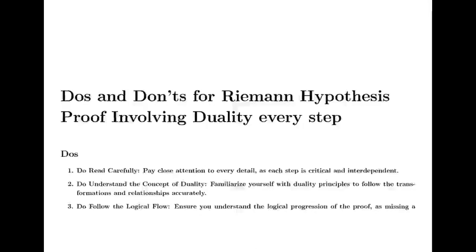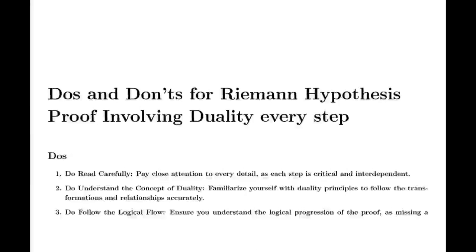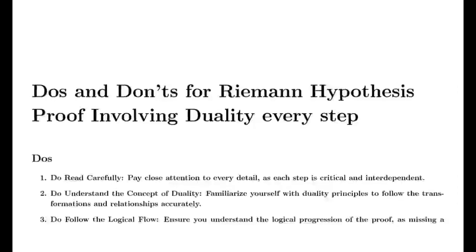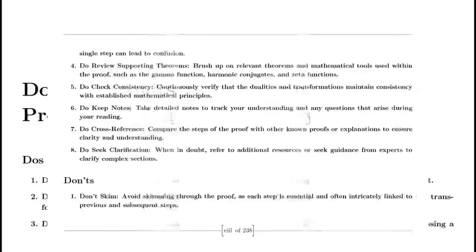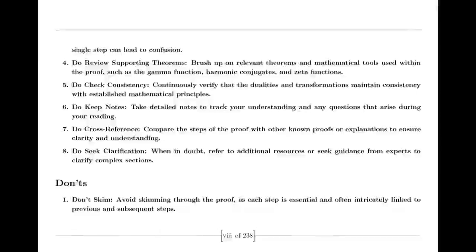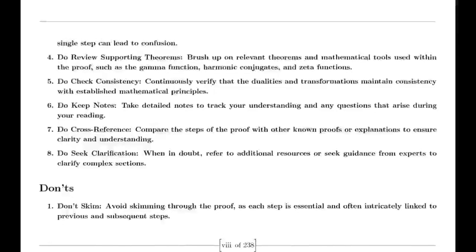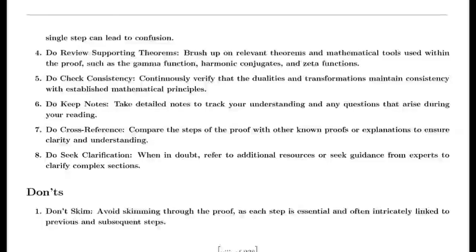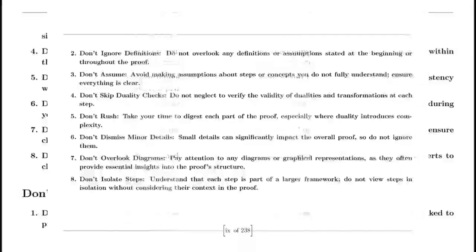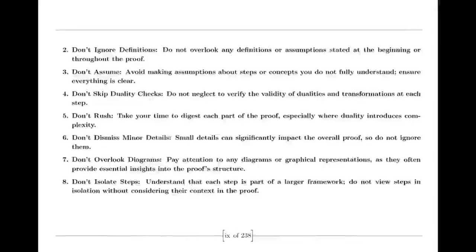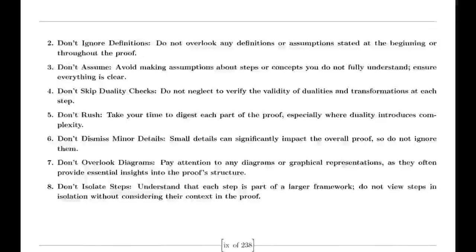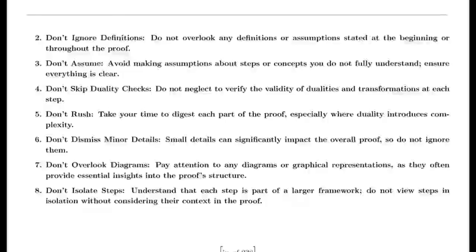Euler also tackled the Basel problem, which was concerned with finding the exact sum of the reciprocals of the squares of the integers. By examining the sine function and its product representation, Euler derived a formula for this sum, showing that it equals π²/6. This result was a significant achievement in mathematics and highlighted Euler's ability to uncover connections between different mathematical concepts.